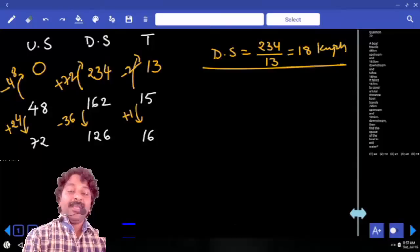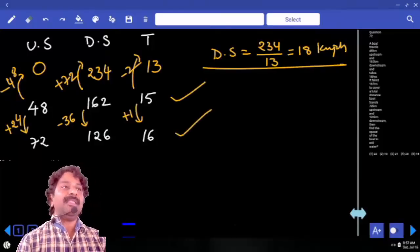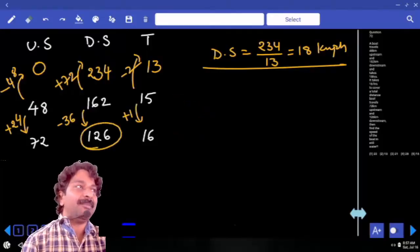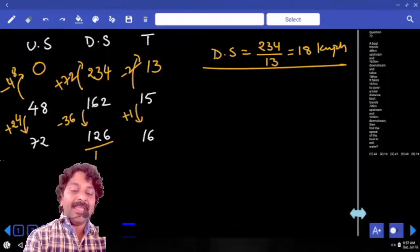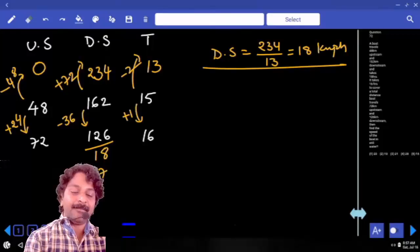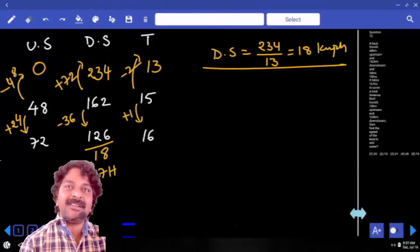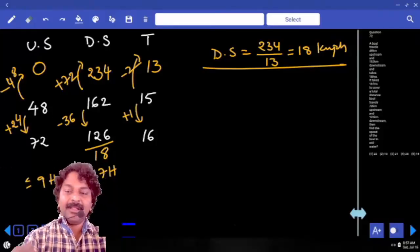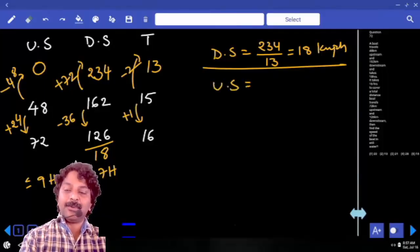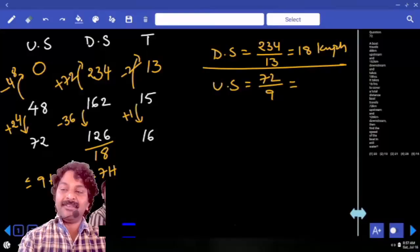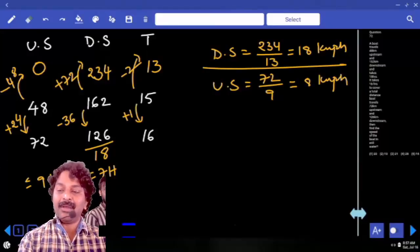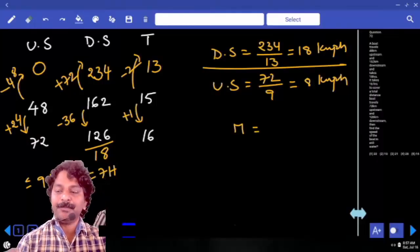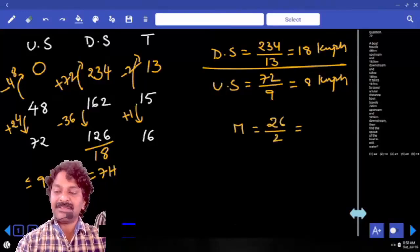Now, use this fellow either in second line or in the third line. It is up to you. I use it in third line. To cover 126 kilometers with a speed 18 kilometer per hour, how much time it will take? But total time is 16 hours. That means to cover 72 kilometers, it takes 9 hours only. With this, upstream speed is equal to 72 by 9 which is 8 kilometer per hour. And what exactly is your question? Speed in still water, which is downstream plus upstream by 2. That is 26 by 2. Answer 13.